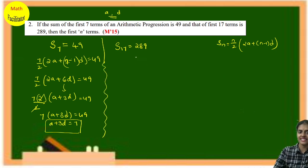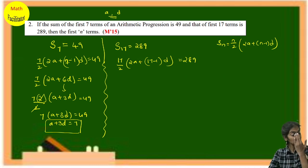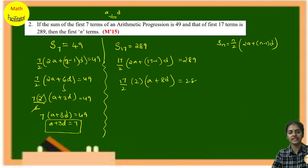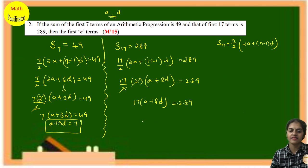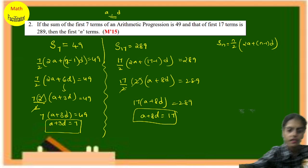For S17: (17/2)(2a + 16d) = 289. Simplifying: 17(a + 8d) = 289, so a + 8d = 17. This is equation 2. Subtracting equation 1 from equation 2: 5d = 10, so d = 2.